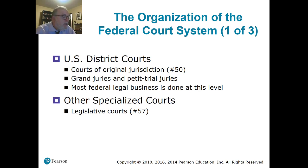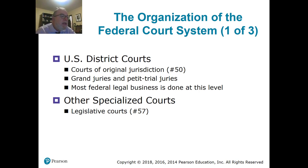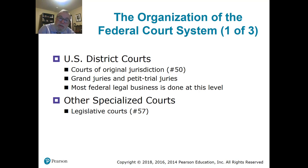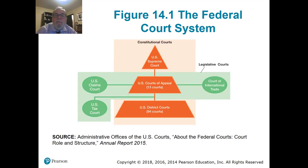They also have specialized courts. Number 57 asks: what courts did Congress establish to adjudicate highly specialized court cases? The answer is legislative courts — the court of claims is one, where you can make claims against someone, or a tax court. Tax law is very specific, and you want judges that understand the tax code to work in that area. So here's the federal court system: the 94 U.S. district courts, and the tax court, court of claims, and international trade — those legislative courts.